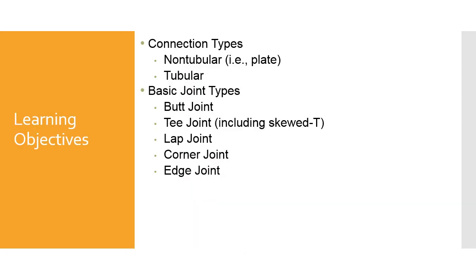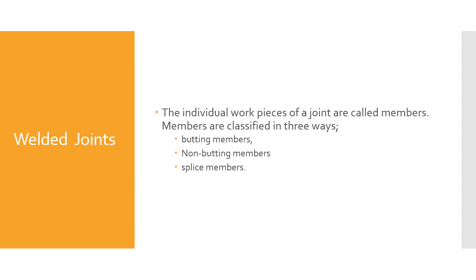In this module we're going to talk about connection types, non-tubular and tubular. Then we're going to get into basic joint types: butt joints, T joints, lap joints, corner joints, and edge joints.